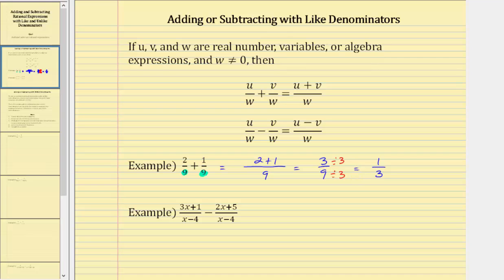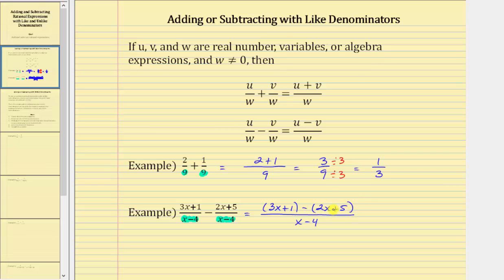Next, we have a difference, but notice how we do have a common denominator of x minus four. To find the difference, the denominator remains x minus four and we subtract the numerators, which gives us the quantity three x plus one minus the quantity two x plus five. We need the parentheses here to make sure we subtract the entire numerator of the second fraction.